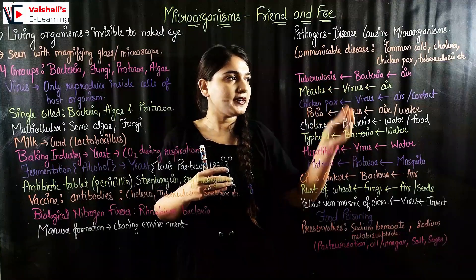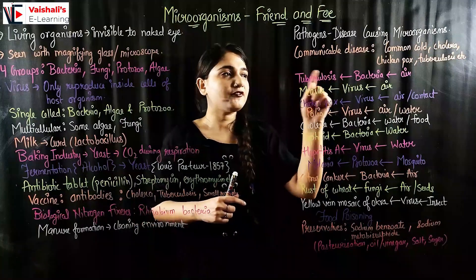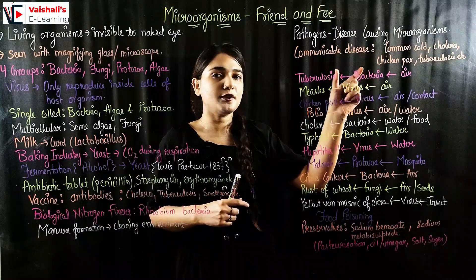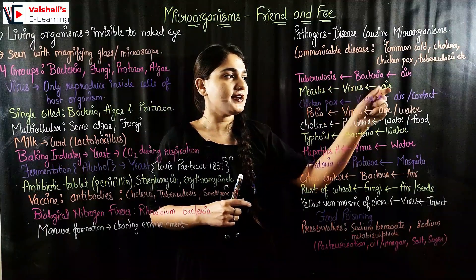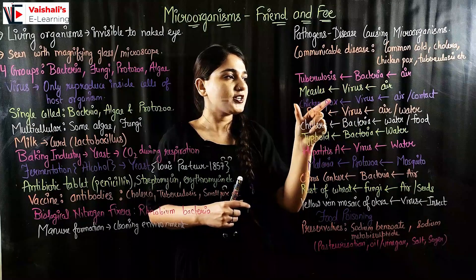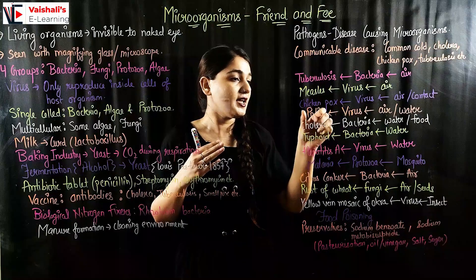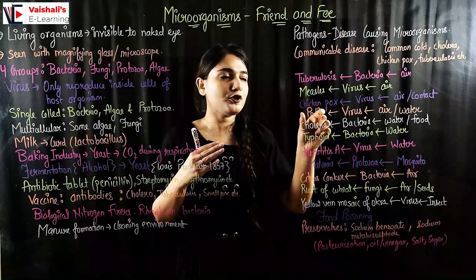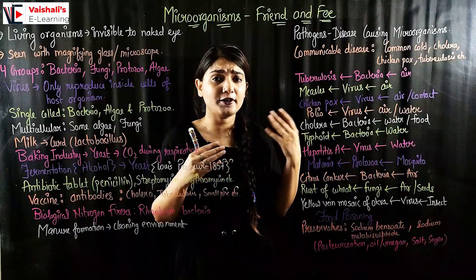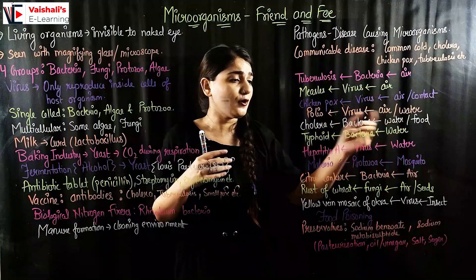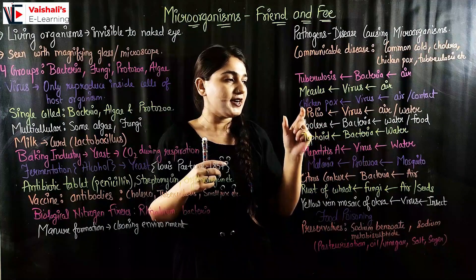Let's look at various diseases, their causative microorganism, and means of transmission. Tuberculosis (TB) is caused by tuberculosis bacteria and spreads through air. Measles is caused by a virus and spreads through air. Chicken pox is caused by a virus and spreads through air as well as contact with a person. Polio is caused by a virus and spreads through air or water. Cholera is a bacterial disease that spreads through water or food.